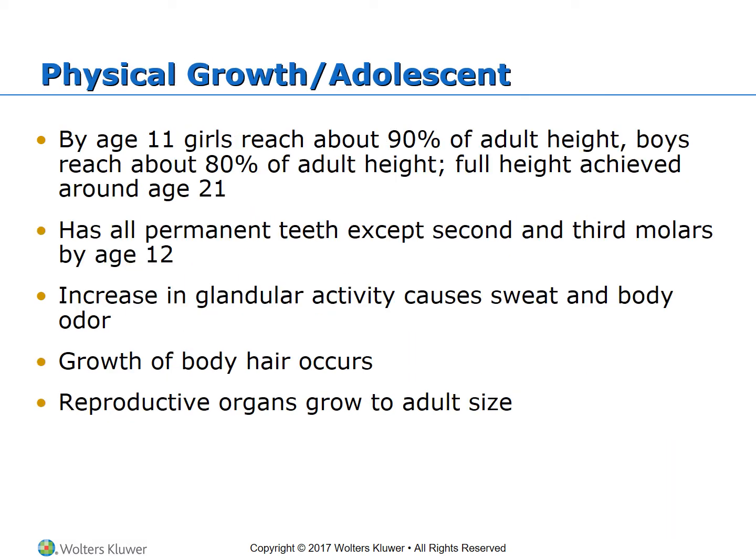Physical growth for adolescents: by age 11, girls reach about 90% of adult height, where boys reach about 80% of adult height. Full height is achieved around age 21. They have all their permanent teeth except for their second and third molars by age 12. There is also an increase in glandular activity, which causes sweat and body odor. Hormonal changes control growth and other physical aspects, and can be responsible for acne in some adolescents. Growth of body hair occurs and reproductive organs grow to adult size.